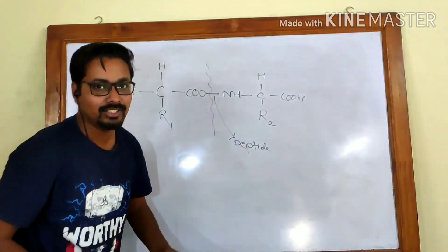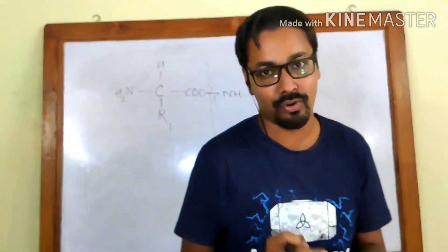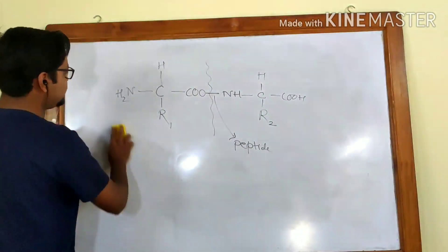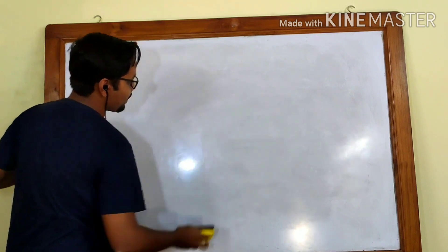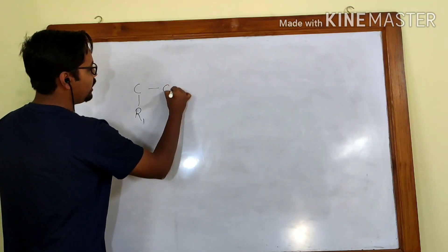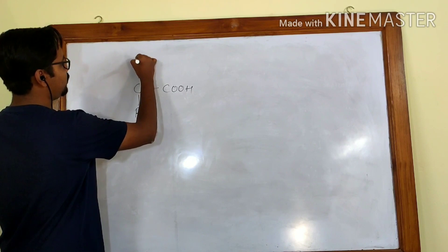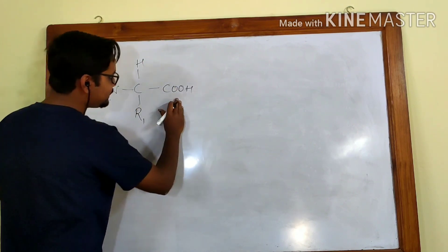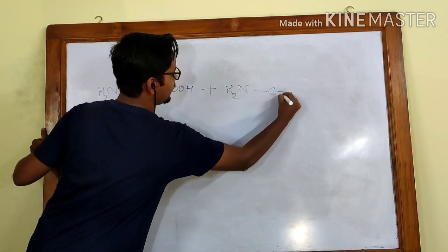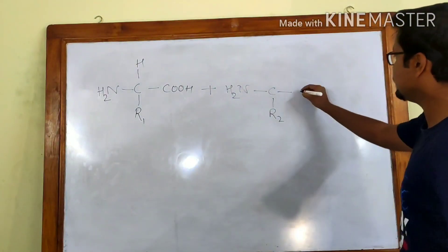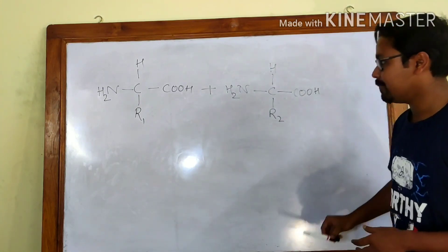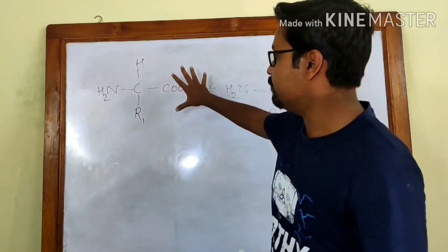Now let us see how the peptide bond is actually formed — that is the important part. Let the first amino acid have an R group called R1, with a COOH, a hydrogen, and an amino group. This will be bonded to another amino acid with the same groups attached except the R group is different (R2), also having a COOH and one hydrogen.